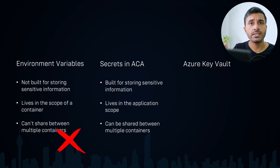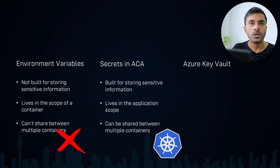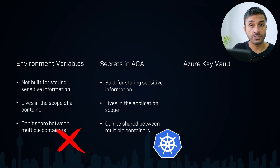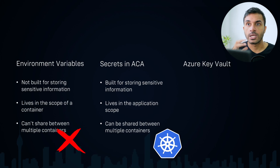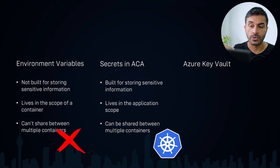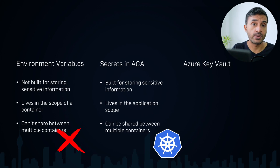The idea of a secret is common in Kubernetes as well. Kubernetes also has the idea of a secret. They also should be mapped to an environment variable to use them. In addition to that, with Kubernetes you can mount a secret as a file in the drive, so you can basically read the secret as a file. But with Azure Container Apps, we don't have that option yet.